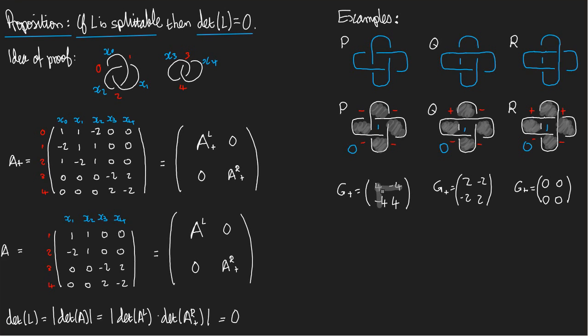Now let me erase a row and column every time to get my actual Guritz matrix. G, that's just the matrix with a single entry, 4. G, the matrix with a single entry, 2. G, the matrix with a single entry, 0. So now, the determinant of P is the absolute value of the determinant of G. So that's 4. The determinant of Q is 2. And the determinant of R is 0.